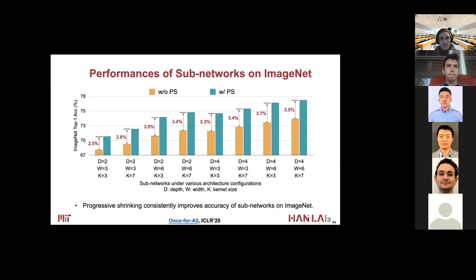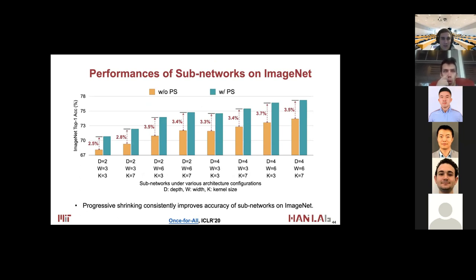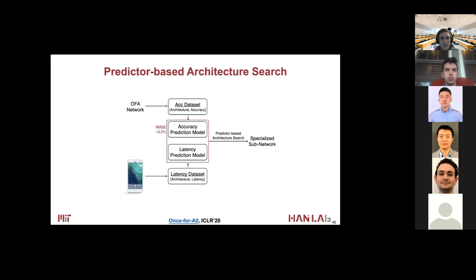Here are the results on different subnetworks sampled from the pre-trained Once-for-All network on ImageNet. Across many different architectural configurations, progressive shrinking — shown in green — consistently outperforms training without progressive shrinking, which is shown in yellow. Based on the pre-trained Once-for-All network, we want to quickly get a specialized subnetwork for a given hardware and constraint.